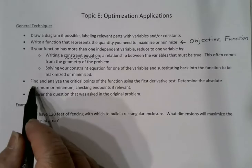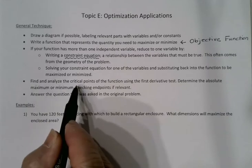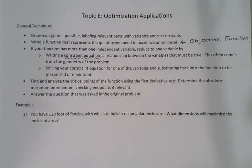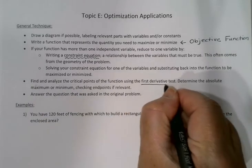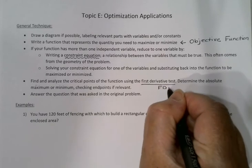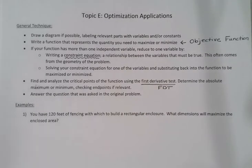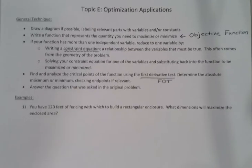Once you've got it down to one variable, we'll find and analyze the critical points of the function using our first derivative test. Then we'll determine our absolute max or min, checking endpoints if there are endpoints that are relevant to the problem. Finally, make sure we actually answer whatever the original question was.